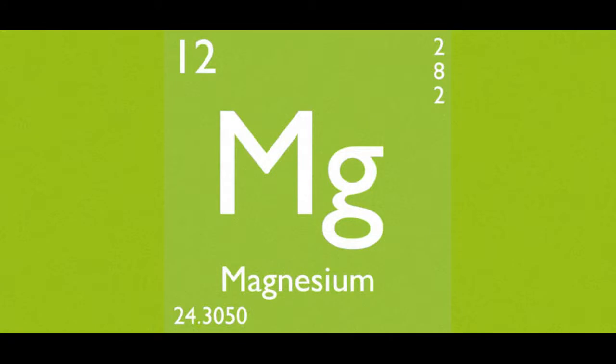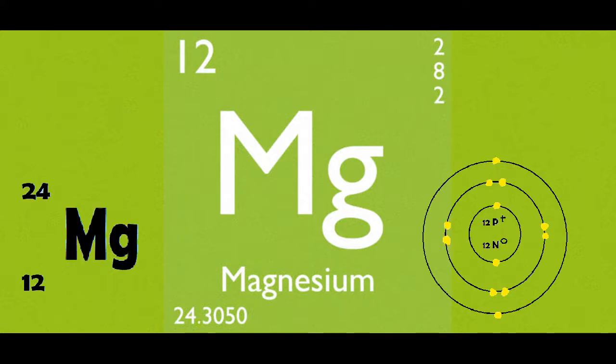Magnesium is the 12th element on the periodic table with the symbol MG. It belongs to the alkaline earth metals group. It has an atomic mass of 24 and it has 12 protons.